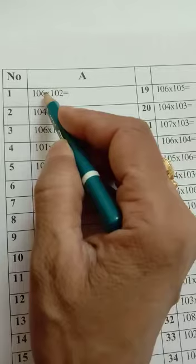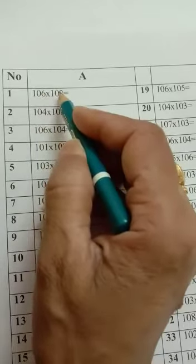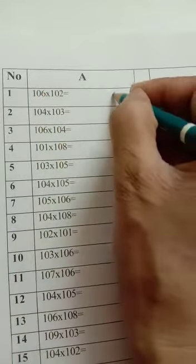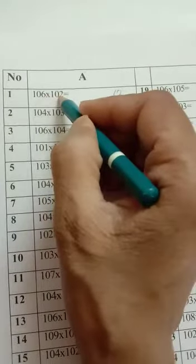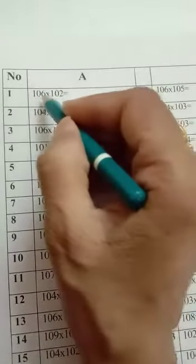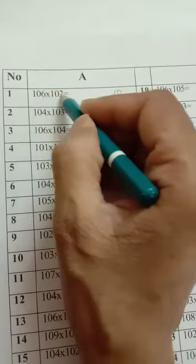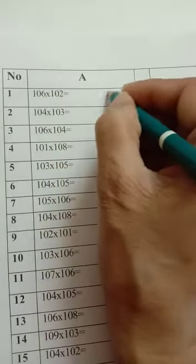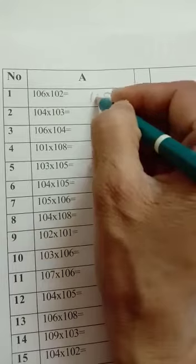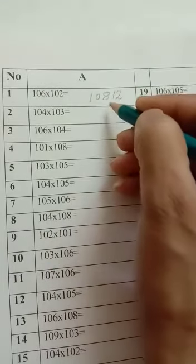First take, you multiply 6 multiply by 2. 2 6s are 12. Then 6 multiply by 2, 6 2s are 12. Then you add 6 plus 2 is 8. Then 10. Answer is 10812.